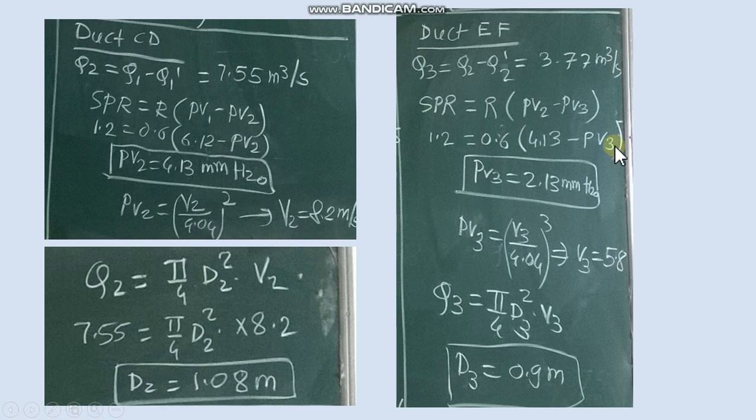So Q2 dash is 3.77. So in EF duct we get discharge. Then from SPR formula we get dynamic pressure in 3rd duct. From this we get velocity in 3rd duct. Then 3rd duct velocity and 3rd duct discharge we get diameter of 3rd duct.